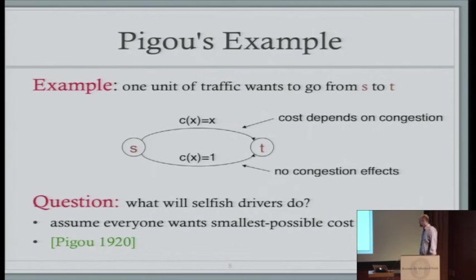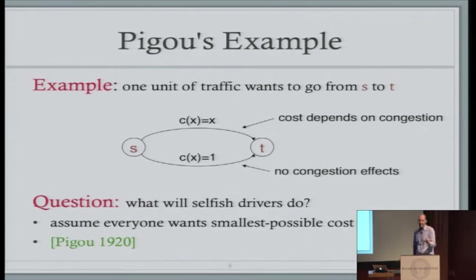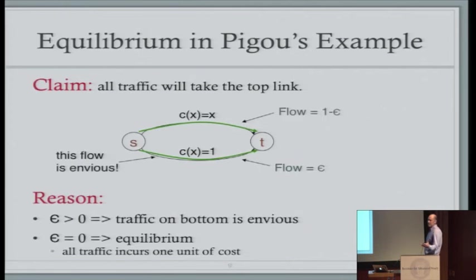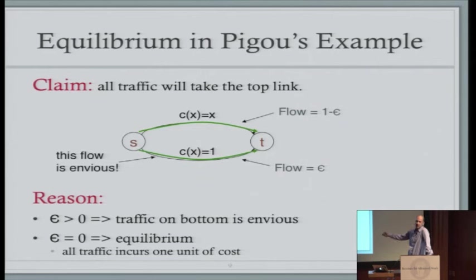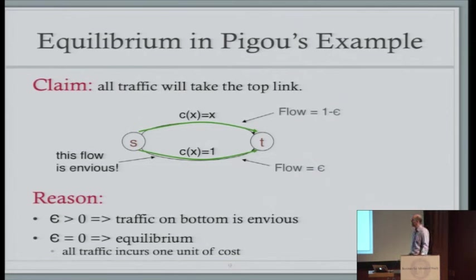Pigou was interested in what self-interested drivers would do and whether it was optimal. Every driver has a dominant strategy — take highway 101. The worst case on 101 is one hour, which equals the best case on 280, so there's no reason not to take 101. At equilibrium, 101 is fully congested and everybody takes an hour. An altruistic dictator would wisely split traffic 50-50: drivers on 280 take an hour, drivers on 101 take just half an hour, reducing average commute from 60 to 45 minutes.